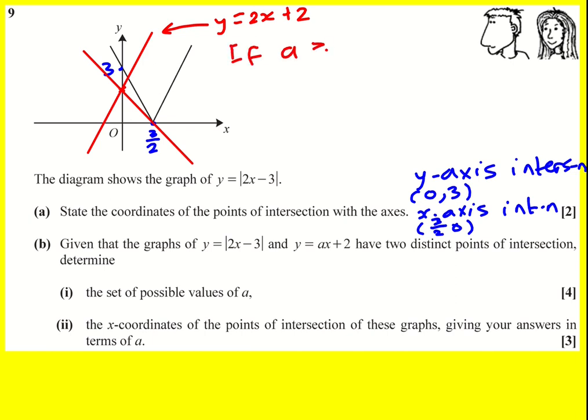If a is greater than or equal to 2, then it will only intersect once. At the moment these are parallel so they never intersect, and when it goes steeper it's not going to intersect again either. That's a condition we've got. If a is greater than or equal to 2, it will only intersect once, so we need a is less than 2 for a start.